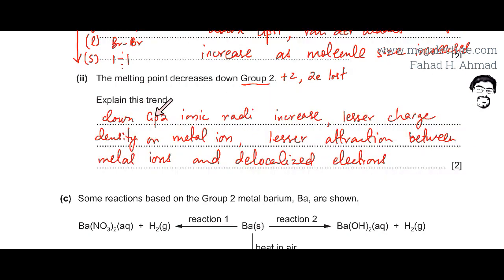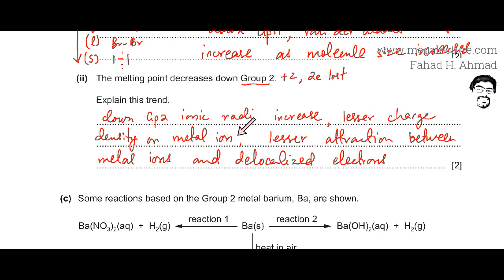So the written statement is: down group 2, ionic radius increases — specifically cationic radius increases — and there is lesser charge density of the metal ion. With bigger ions, the positive charge is more distributed, leading to lesser charge density and lesser attraction between metal ions and the delocalized electrons. This means weaker metallic bonds, which is why melting point decreases down group 2.